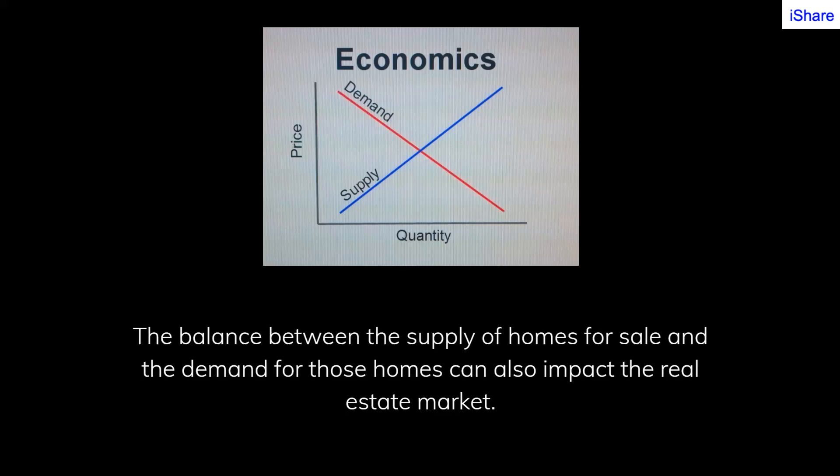The balance between the supply of homes for sale and the demand for those homes can also impact the real estate market. If demand is high and supply is limited, prices may rise. If supply is high and demand is low, prices may decline. The supply of homes can be influenced by factors such as the rate of new construction and the number of homes being put up for sale by their owners. The demand for homes can be influenced by factors such as population growth, household formation, and the level of consumer confidence.